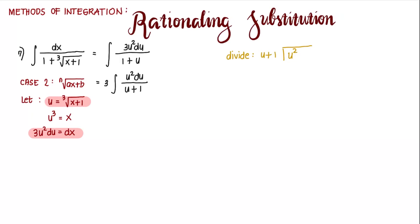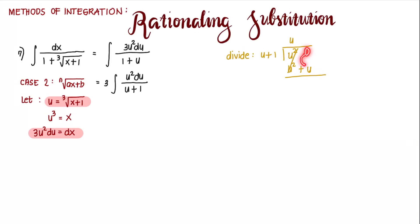It's always the first term divided by the first term, so that gives u. Multiply: u times (u plus 1) is u squared plus u. Then we subtract, canceling the u squared term, leaving an imaginary 0 minus u, which gives negative u.